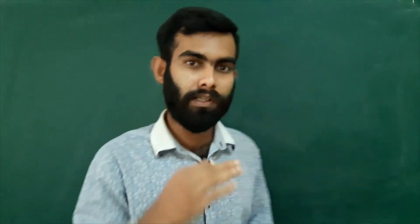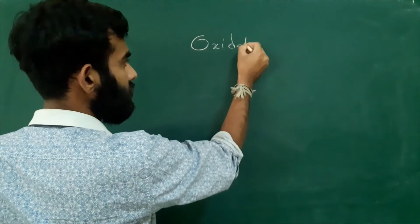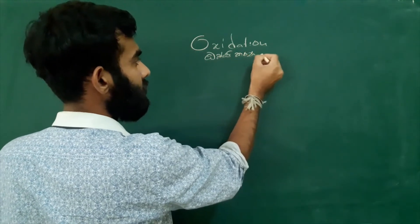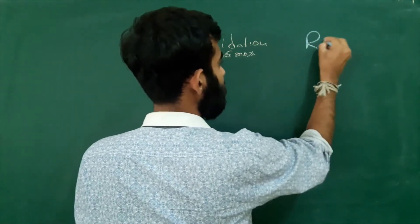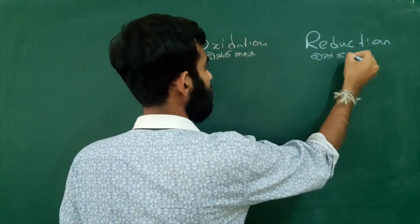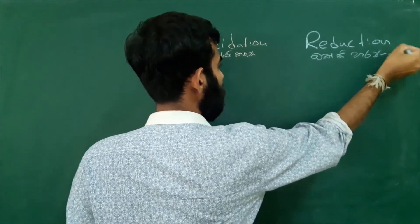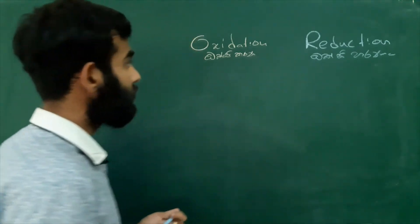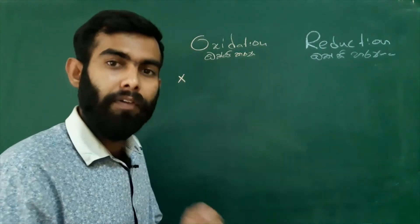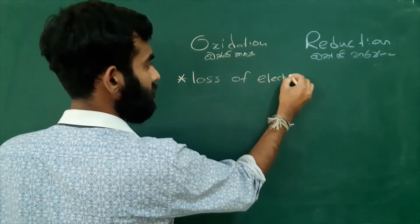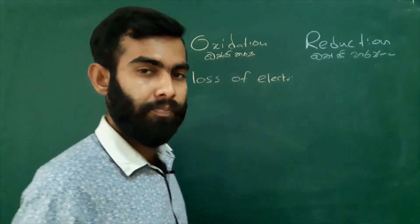Before talking about reduction potential, I will explain what oxidation and reduction are — the difference between oxidation and reduction. When we conclude the definitions of these two terms: oxidation means loss of electrons. Loss of electrons from a particular element. Oxidation means loss of electrons.